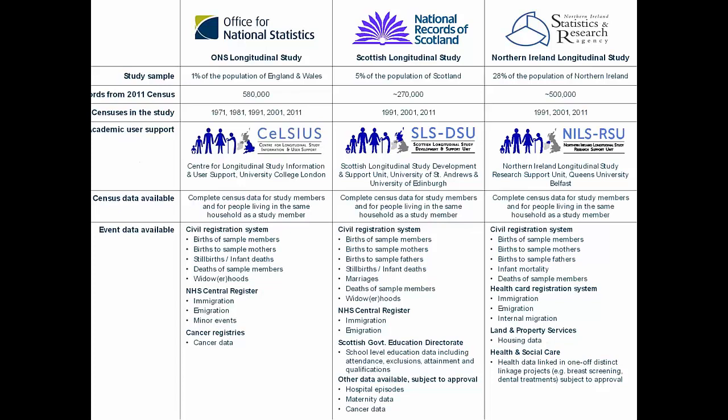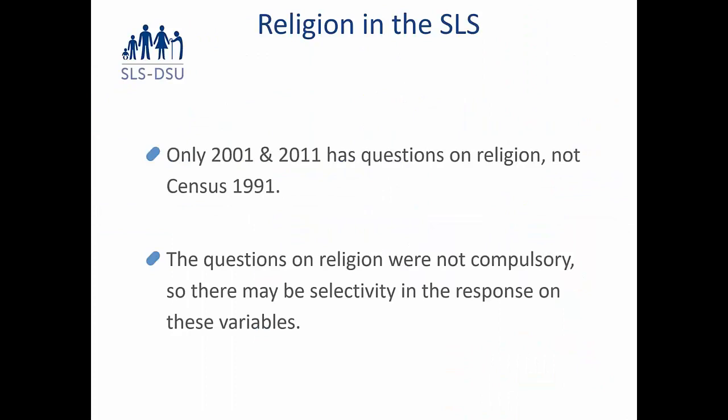All three of these studies are quite similar, and there is the possibility of doing comparative studies — a quite powerful resource, particularly in relation to studies interested in religion. Moving specifically to religion in the SLS, religion was collected in two censuses: the question was asked in 2001 and 2011, but not in 1991. Similar to the ONS-LS, the questions on religion were not compulsory, so there is the possibility of selectivity in responses.